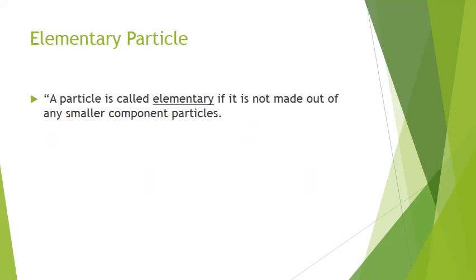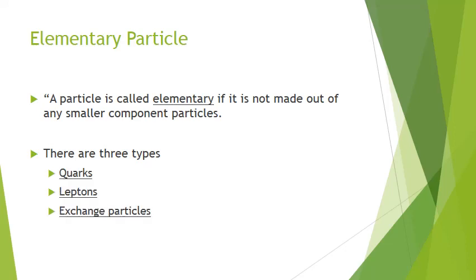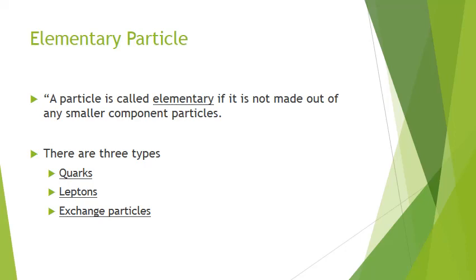An elementary particle is elementary because it's not made up of any smaller parts. We have three types: quarks, leptons, and exchange particles. These are the categories that we'll look at.